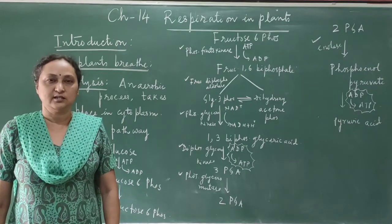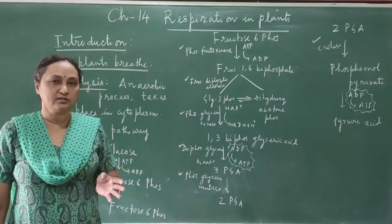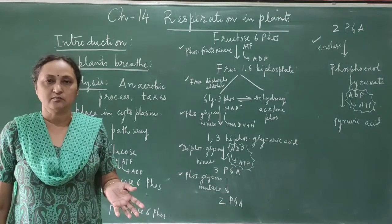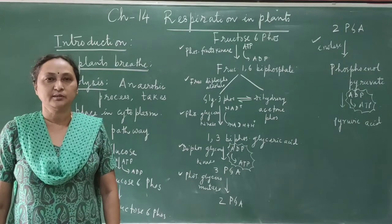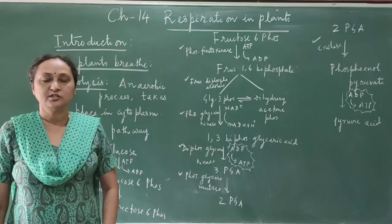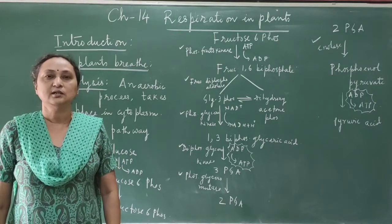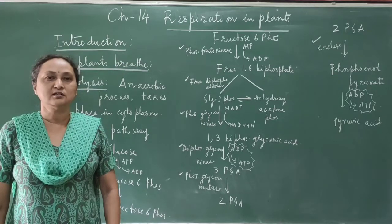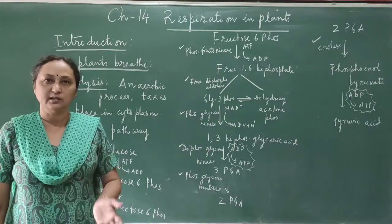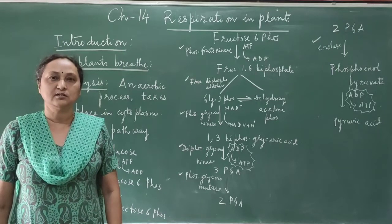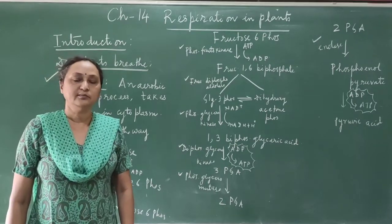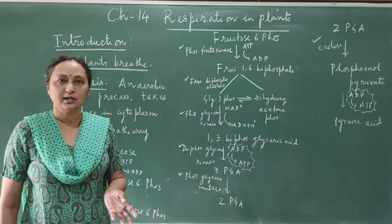In the whole trunk you can find other openings called lenticels. In leaves, the openings are called stomata, and with the help of stomata the plants take in oxygen and give out carbon dioxide. During daytime, respiration is not very prominent because photosynthesis is dominant and oxygen is also liberated as a byproduct. In the trunk, lenticels also serve as permanent openings through which plants can take in oxygen and give out carbon dioxide.